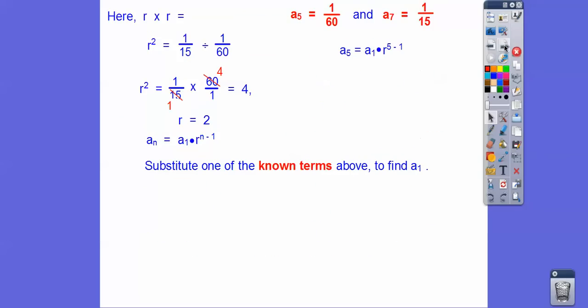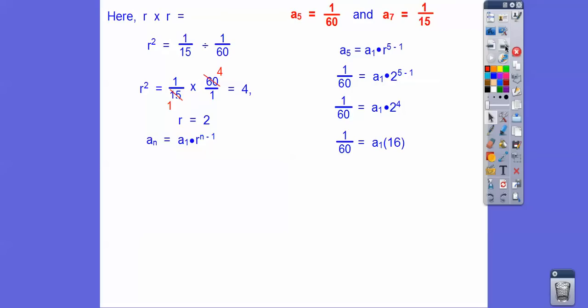So here, let's go ahead and substitute a sub 5 in right there. So a sub 5, without putting r in right there, would be 5 minus 1. So that's going to be 4, and then since we know a sub 5 is 1/60th, we'll substitute in 1/60th right there. And since we know 2 is r, we'll put in 2 right there, and then 5 minus 1 is 4. So we end up getting 1/60th equals a sub 1 times 2 to the should be 4th right there.